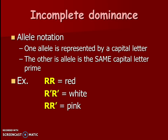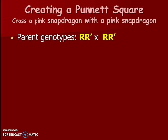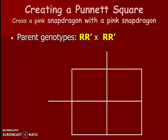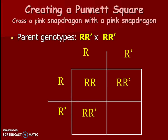Let's do a Punnett square. Let's cross two pink snapdragons. Here's our parental cross — we don't need to write a key right now because we already know what each thing represents. We'll write our parents on the outside and fill in the inside just like normal Punnett squares. The only thing that's different is we have different allele notation because we don't have a recessive version and our hybrid is pretty different.